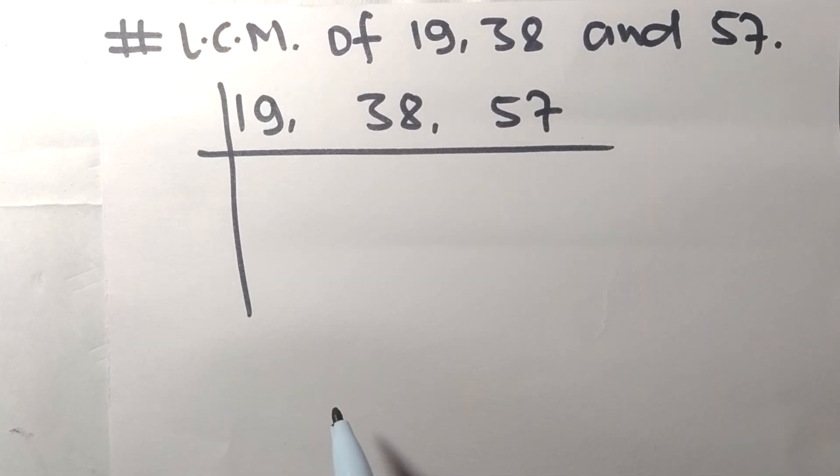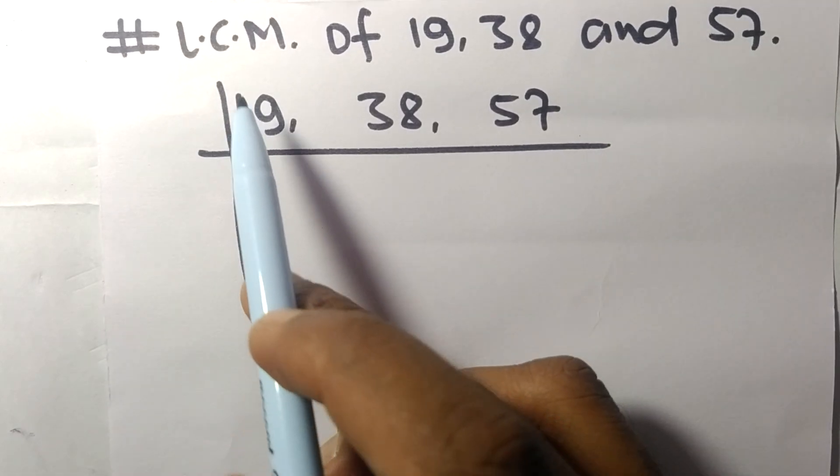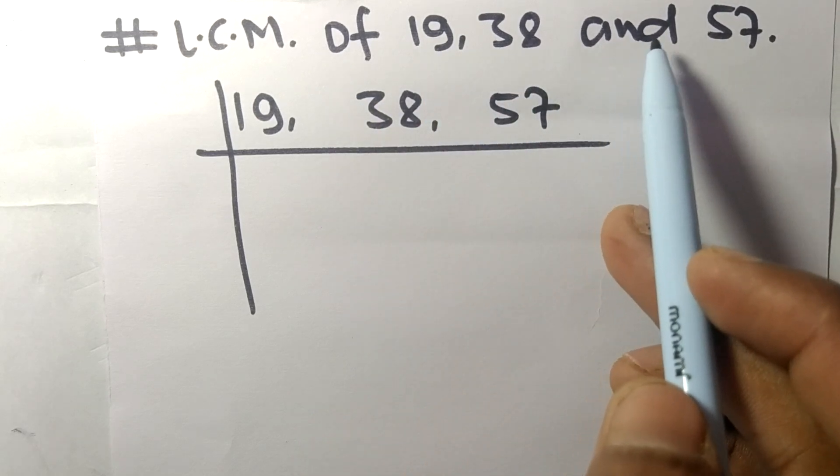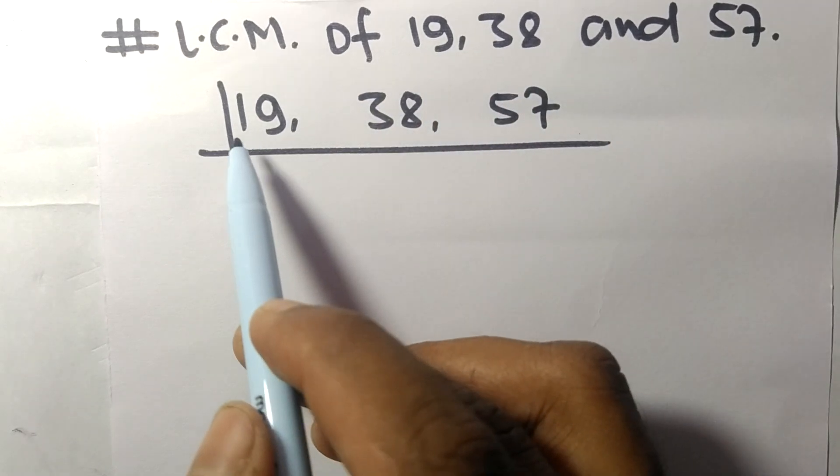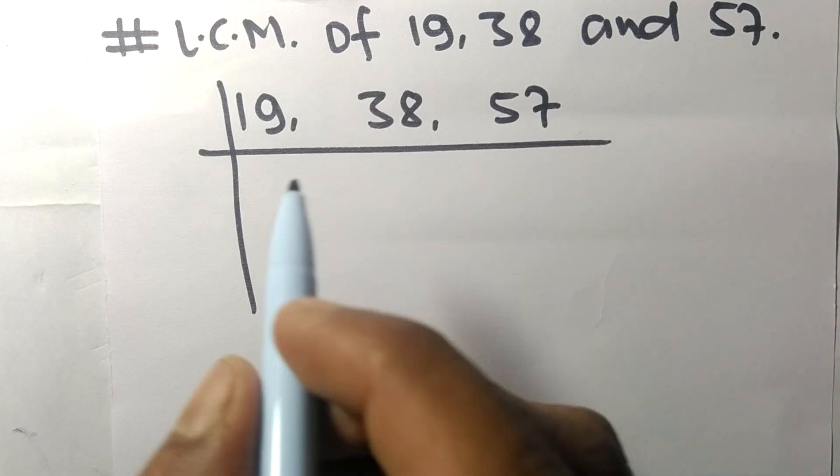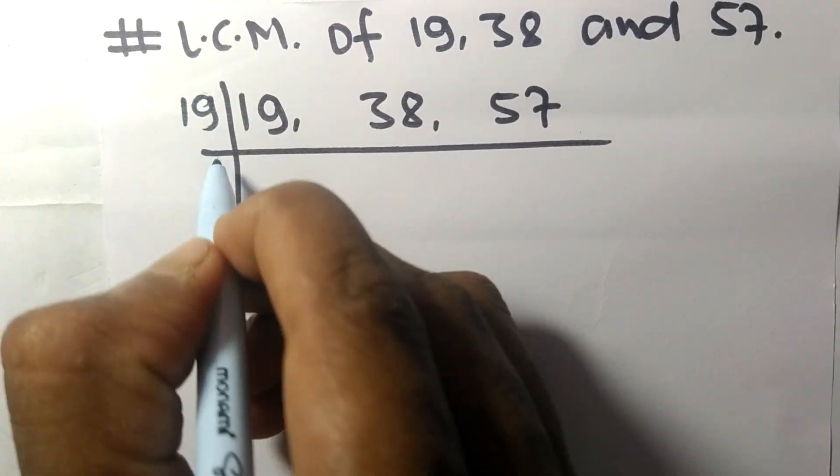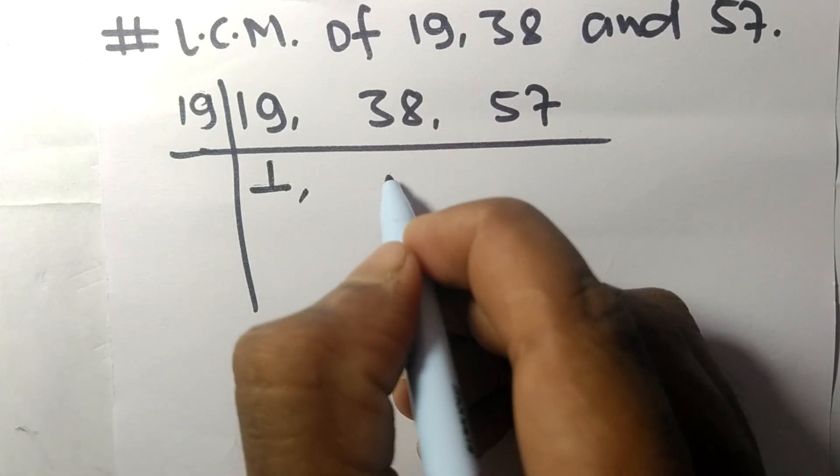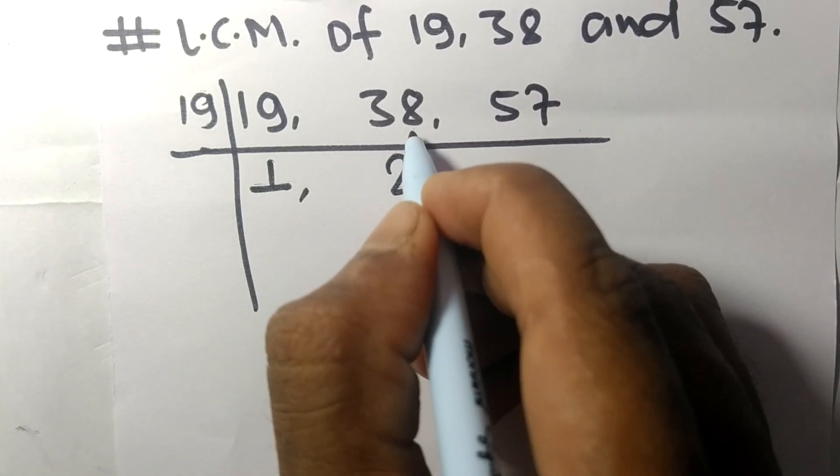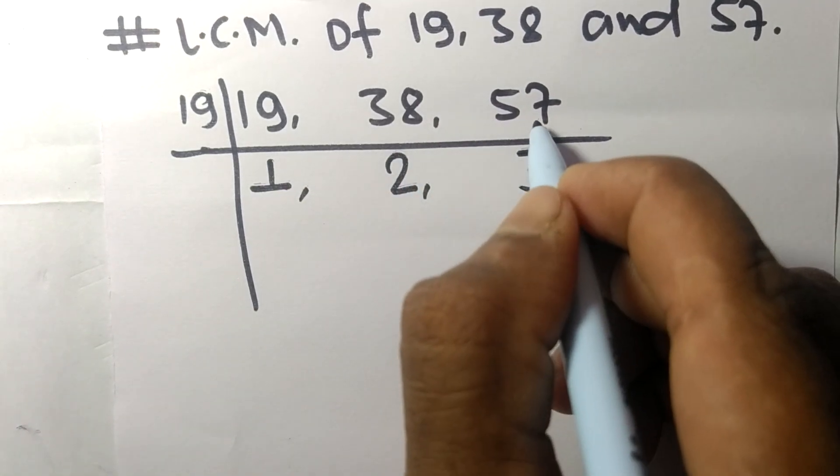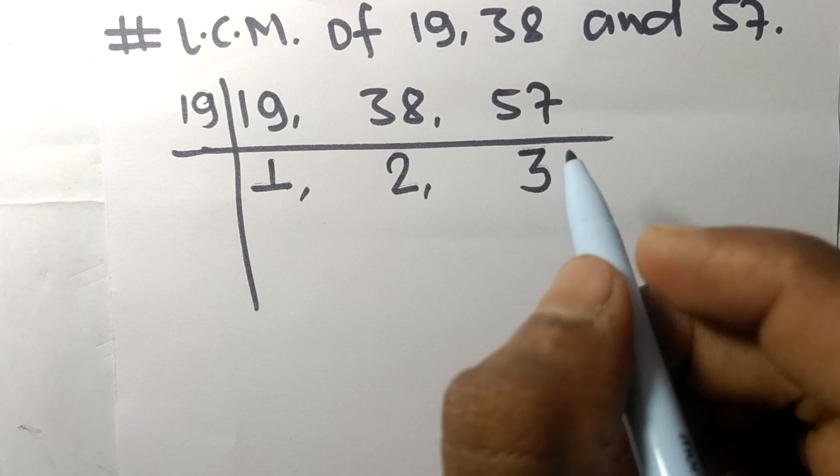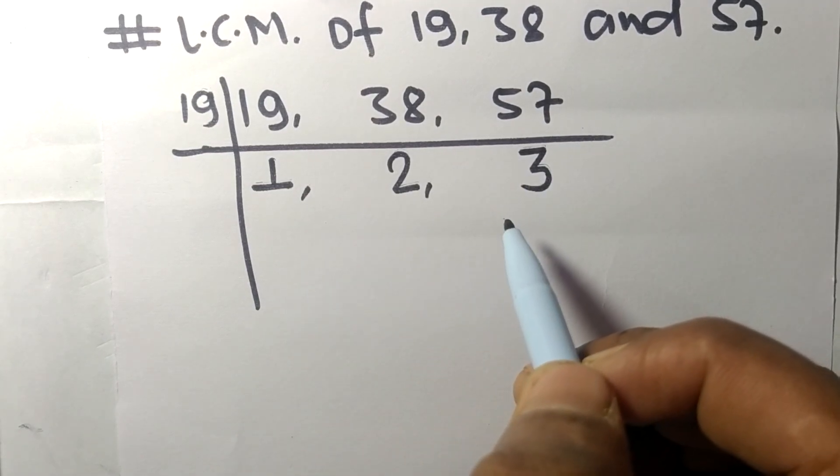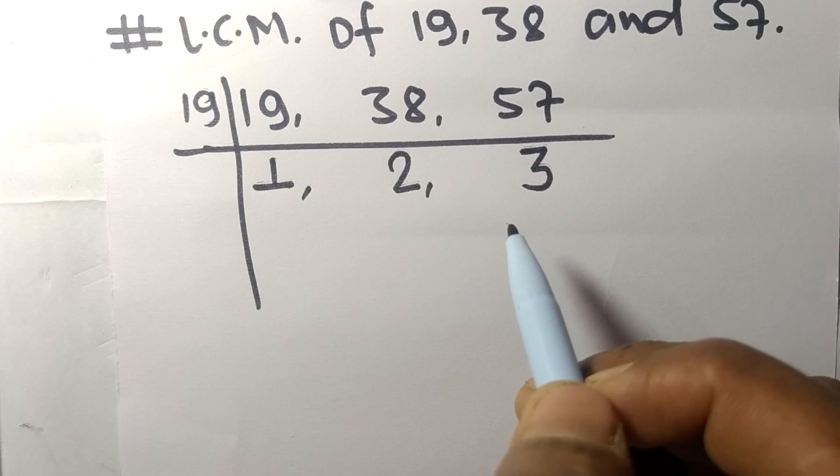Today in this video we shall learn to find the LCM of 19, 38 and 57. All these numbers are divisible by 19: 19 times 1 means 19, 19 times 2 means 38, 19 times 3 means 57. Now the numbers 1, 2, and 3 are not divisible by the same number.